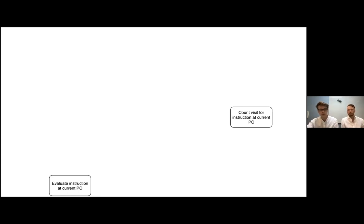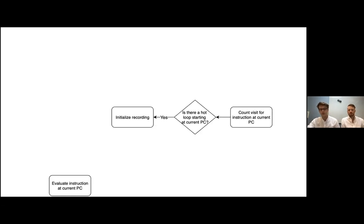The compiler starts by simply interpreting the source code line by line, which makes startup times very fast — though interpreting a program is quite slow. While interpreting, we count how many times each line of code is evaluated in order to find the parts of the code that are executed the most. More specifically, we're looking for loop headers, because as mentioned, loops are where a program spends most of its time. Once a loop has been run a set number of times, we consider it a hot loop and will start recording it.